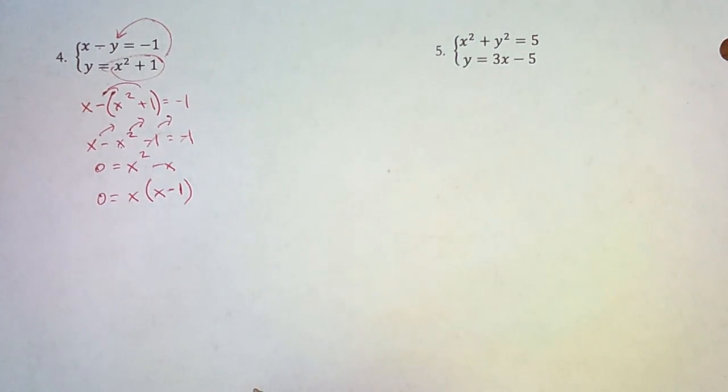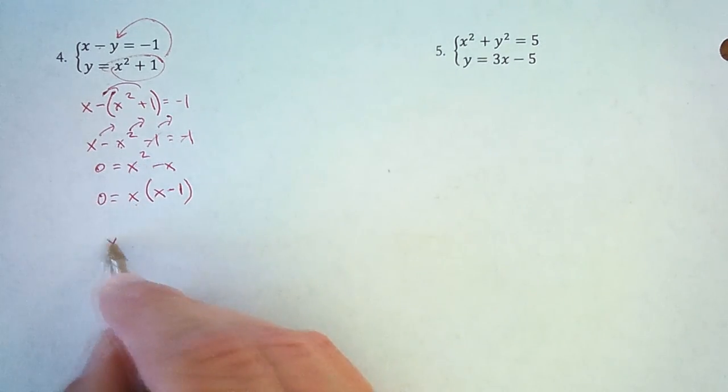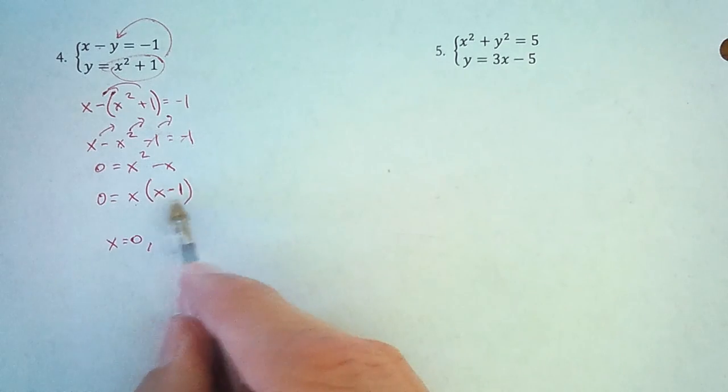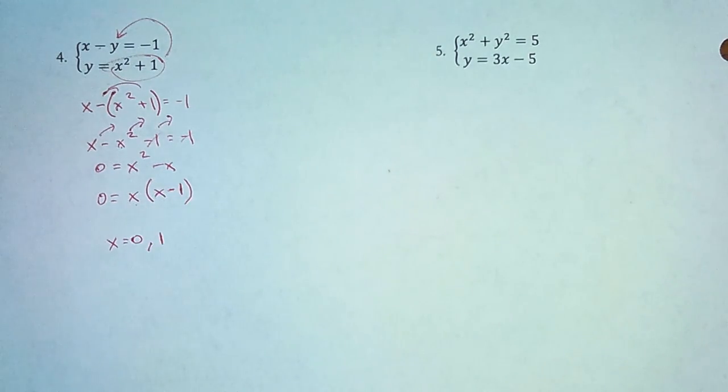And this is going to give me two solutions for x. What value of x makes this factor 0? Well, that would be if x is 0. What value of x makes this factor 0? That would be 1. 1 minus 1 is 0. So x can be 0 and it can be 1.